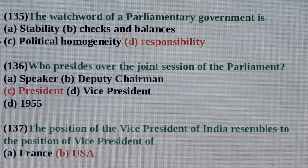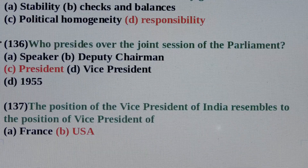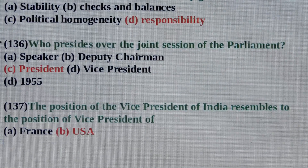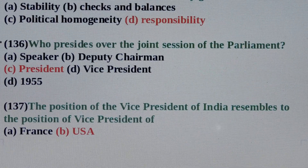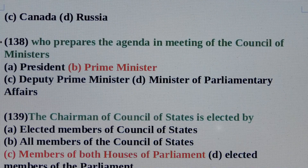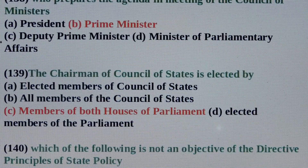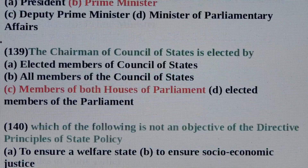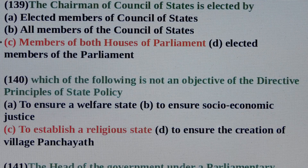Question No. 136: Who presides for the Joint Session of the Parliament? Answer is Option C: President. Question No. 137: The position of the Vice President of India resembles to the position of Vice President of? Answer is Option B: USA. Question No. 138: Who prepares the Agenda in meeting of the Council of Ministers? Answer is Option B: Prime Minister. Question No. 139: The Chairman of the Council of States is elected by? Answer is Option C: Members of both Houses of Parliament. Question No. 140: Which of the following is not an objective of the Directive Principle of State Policy? Answer is Option C: To establish a Religious State.